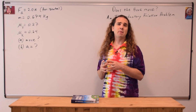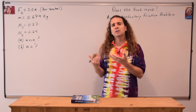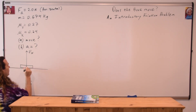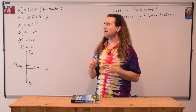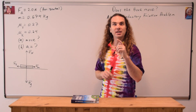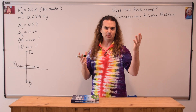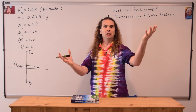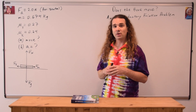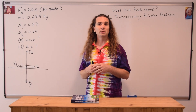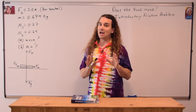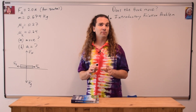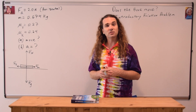We've actually had this same free body diagram several times in a row now, so I will draw it this time. The force applied is to the right, the force of gravity is down, the force normal is up, and the force of friction is to the left. I have not identified whether it's static or kinetic friction because we don't know if the book is moving or not.